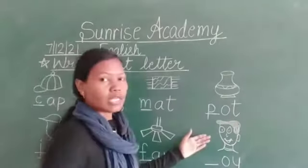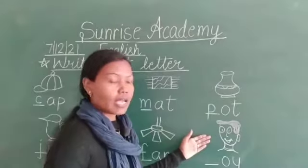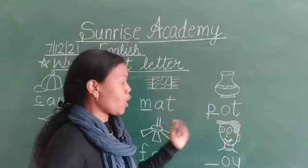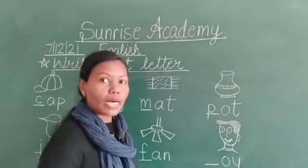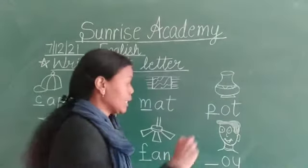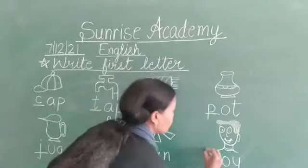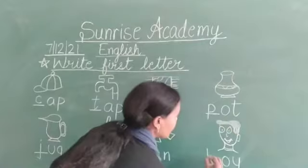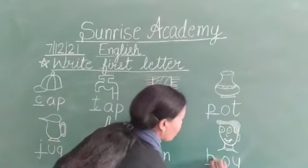Now, the last picture is? Yes — boy. So, 'ba' — will we write B? B, O, Y — boy.